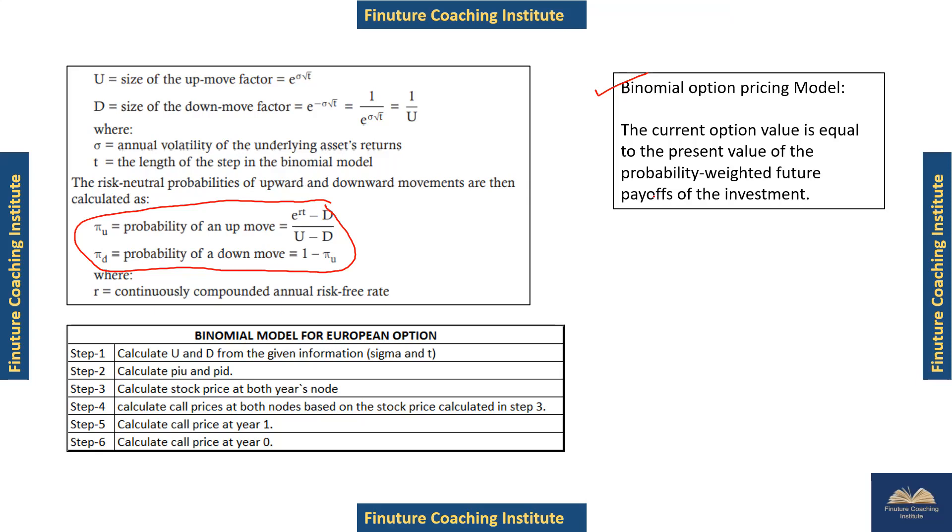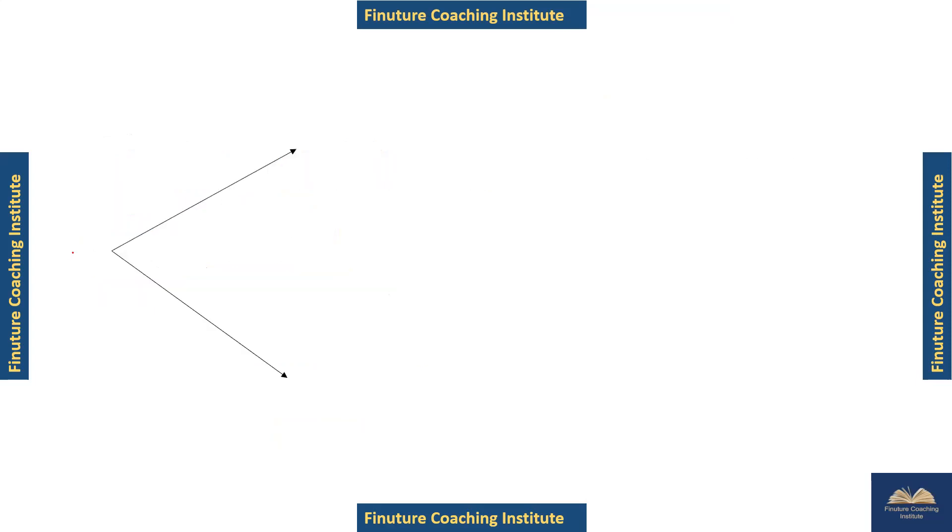Let me plot the information on a node diagram. The current spot price is $47, strike price is $45. When it goes up by 8 units, it goes to $55. Or it can go down to $39. We've been asked to calculate the value of the put option today. This is at t=1 and here we are at t=0.